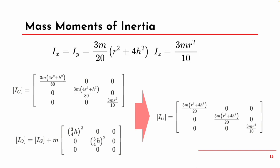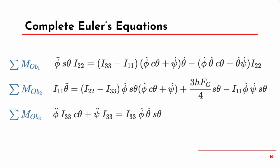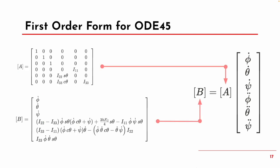We now have all the pieces for our Euler equations: the principal mass moments of inertia, angular acceleration, and angular velocity, all in the body frame. Plugging in the known values for the mass moments of inertia and further simplifying, we get the defining equations for our top. We then put these equations in matrix form to pass into ODE45 for our MATLAB simulation.